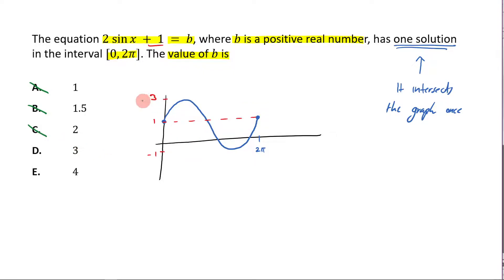If it was 3, it would only intersect it once. D is my answer. And then, of course, E, it wouldn't intersect it at all. So E is not correct. So my answer here is D. Let's circle it, and let's move on.